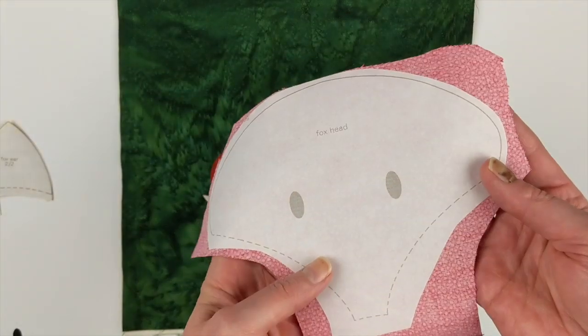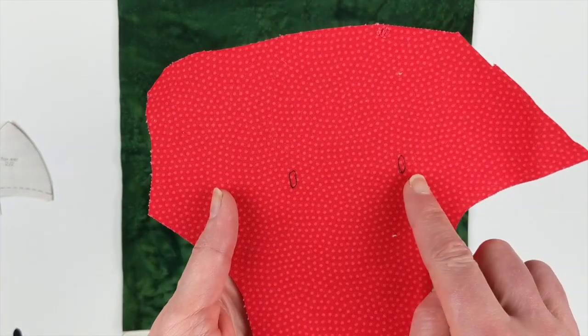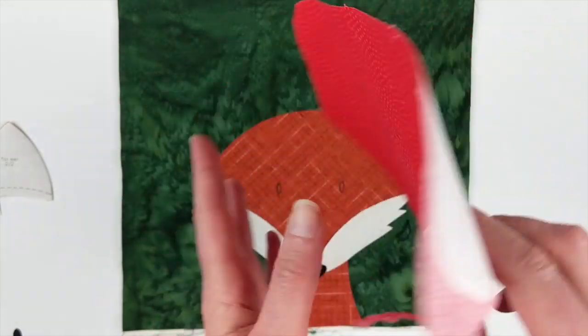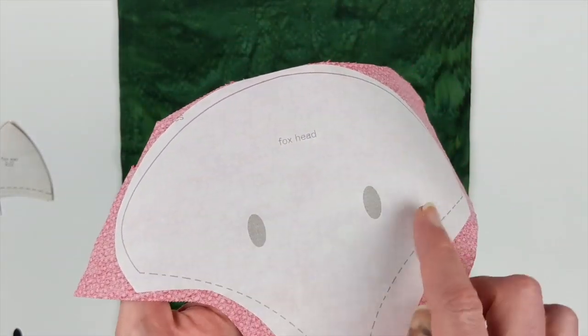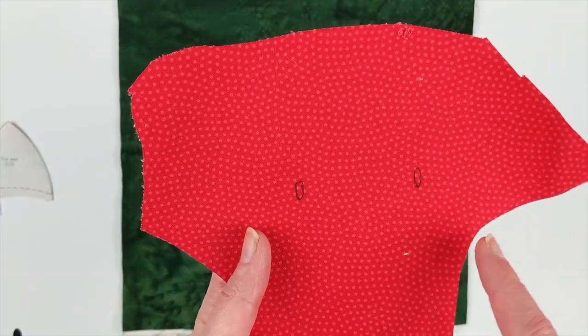So before you peel off the backing, you want to make sure to trace the position of the eyes. So I do that, I hold it up to a window and you can see those circles for the eye. They shine through even a very dark fabric. You'll be able to see them through.